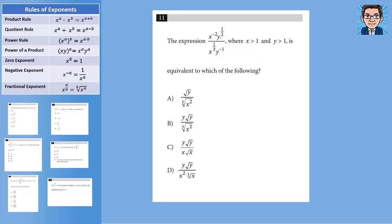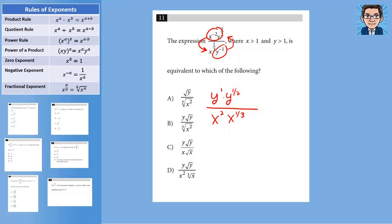The fifth problem has negative and positive exponents mixed in, and we're looking for an equivalent expression. The easiest approach is to eliminate negative exponents by moving them. The y to the 1 half stays in the numerator and x to the 1 third stays in the denominator since they're positive. The y to the negative one moves up and becomes y to the positive one, and x to the negative 2 moves down and becomes x to the positive 2. Converting: y to the 1 half is the square root of y, and x to the 1 third is the cube root of x. This is equivalent to choice D.